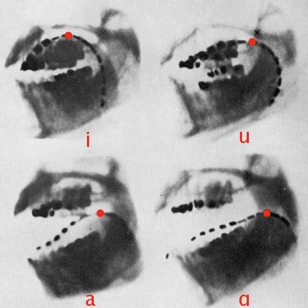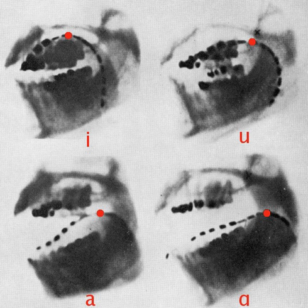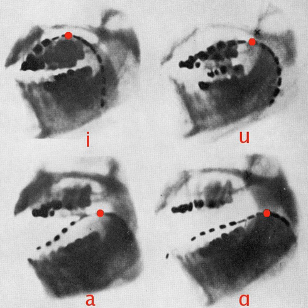Subdiacritics may be moved above a letter to avoid conflict with a descender. The raising and lowering diacritics have optional forms that avoid descenders. The state of the glottis can be finely transcribed with diacritics; a series of alveolar plosives ranging from an open to a closed glottis phonation are possible. Additional diacritics are provided by the extensions to the IPA for speech pathology.